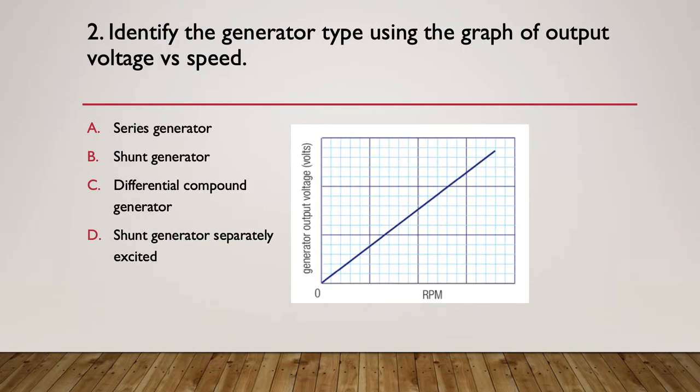Question three: identify the generator type using the graph of output voltage versus speed. Is this a series generator? A shunt generator? C, a differential compound generator? Or D, a shunt, separately excited generator. Which generator has this shape speed curve? Think back to the speed curves you did for generators. There's only one that has a nice linear, flat, straight line curve.